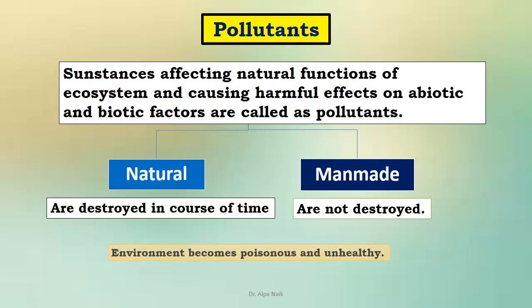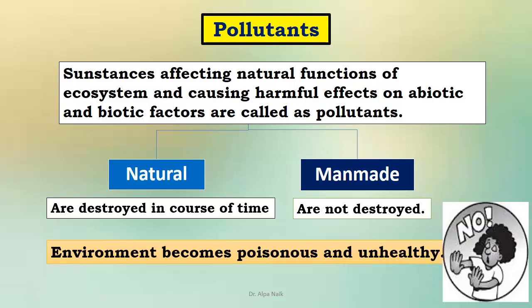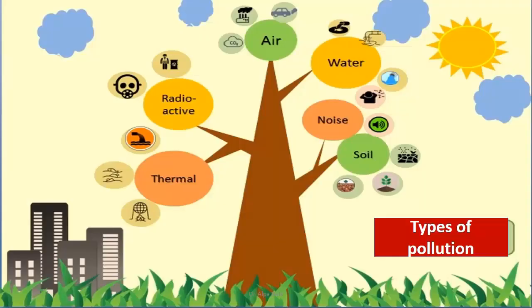The environment becomes poisonous and unhealthy, and such an unhealthy and poisonous environment will affect everything on planet Earth. So, what are the types of pollution? They are air pollution, water pollution, soil pollution, noise pollution, radioactive pollution and thermal pollution.